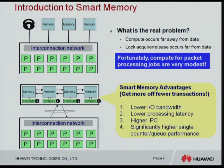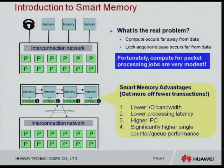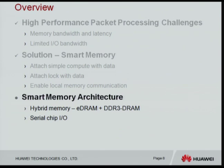Once we add these capabilities to the memory subsystem, we can do a lot of work for very few transactions between the packet processing chip and memory, significantly reducing IO bandwidth. This also cuts operation latency because we don't have to repeatedly go to memory and come back. IPC from the packet processing ASIC improves significantly, we don't need large numbers of parallel contexts in ASICs, and worst-case performance improves because the same data structure can be accessed repeatedly without locking bottlenecks.